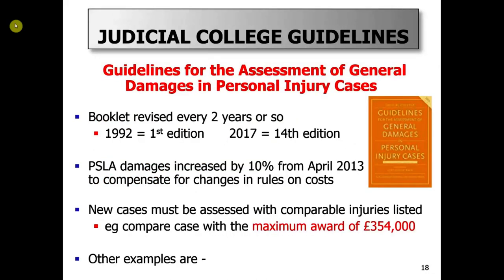What a fine way of achieving law reform under the table. The current edition is about 92 pages. They increased the damages by 10% in 2013. How much do you think is the maximum you'll get for tetraplegia or total comatose brain injury? The maximum award is £354,000. Relate your injury to that — you will never get more than that.